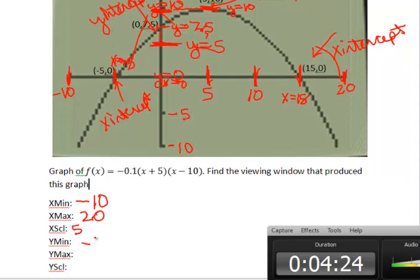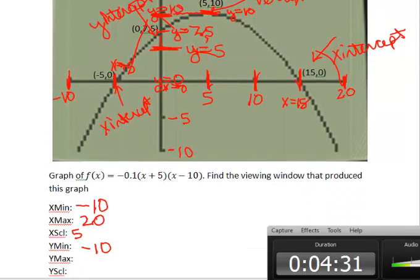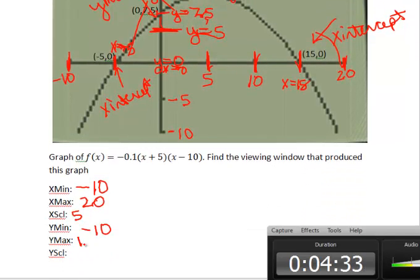So we found that the lowest y value, the y minimum, is y equals negative 10. The highest y value, the y maximum, was y equals 15. And the tick marks on the y-axis are 5 units apart. So y scale is 5.